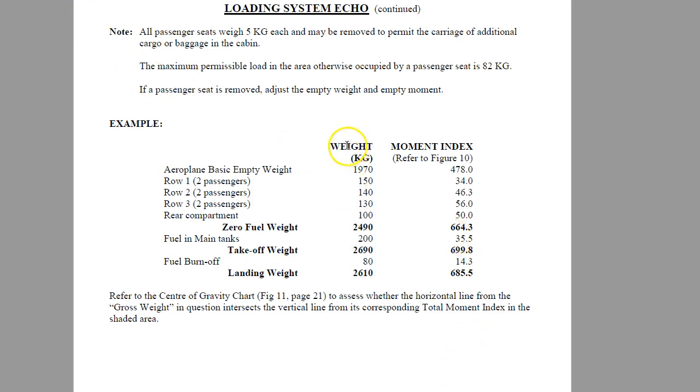You're going to record a chart like this, put all your weights here, then add up your zero fuel weight. Put it in your main tanks, that gives you your takeoff weight, then do your fuel burn, and then your landing weight. Then refer to figure 10 and get the moment index for each of those.